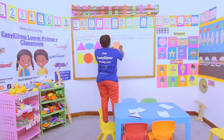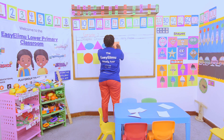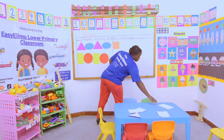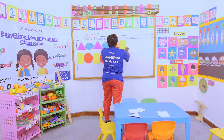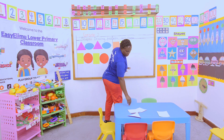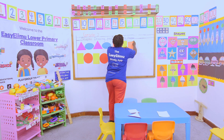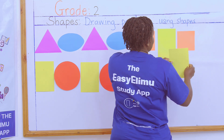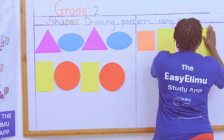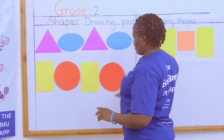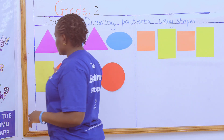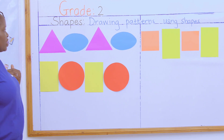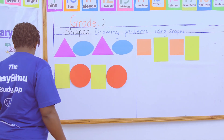I can decide to put the square, then the rectangle, then the square, then the rectangle again — I still have made my pattern. So these are different patterns made using different shapes.